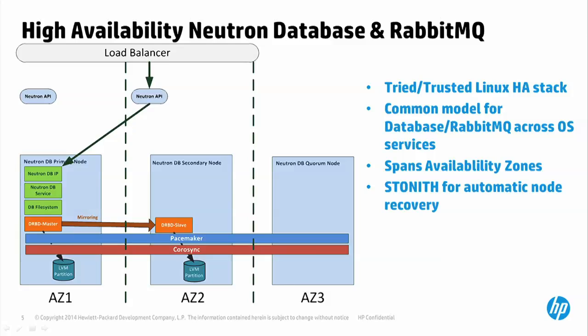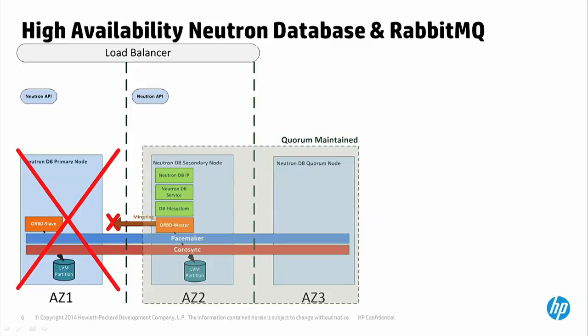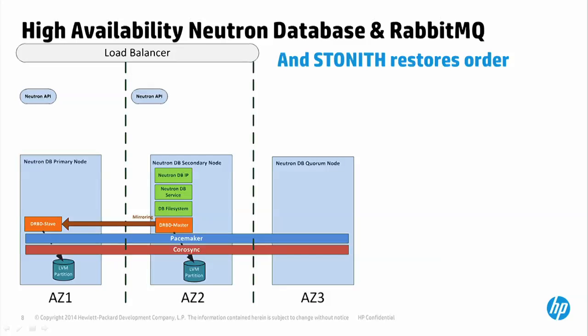In the Neutron database deployment, Pacemaker manages the IP, file system, and the service itself, where the file system is mounted on DRBD. Stonith is used for bringing nodes back into a cluster after failure. In a simple scenario: loss of a node in AZ1 causes Pacemaker to fail over the service; the database promotes the DRBD device on AZ2; APIs continue to work. Stonith resets the AZ1 node and when it rejoins, DRBD devices begin re-syncing. This same model is used for the Neutron RabbitMQ instance and is shared with Cinder, Glance, and Nova in public cloud.